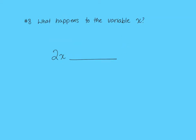Question 8 is going to ask us to do the opposite. So they'll give us an expression, and they're asking what happens to the variable x. Well, 2x means x is multiplied by 2. So you would put that part on the line. So we're basically reversing question 7.